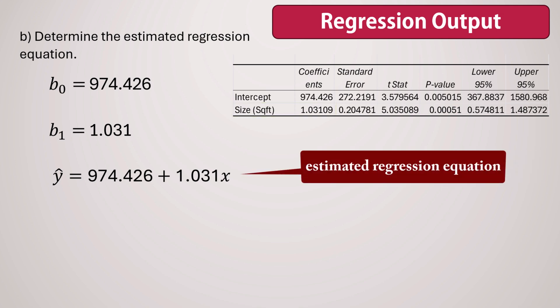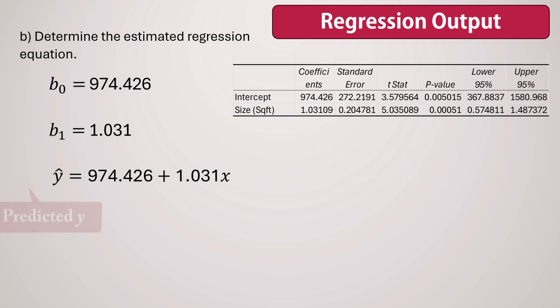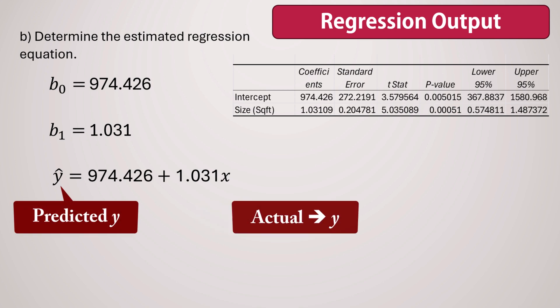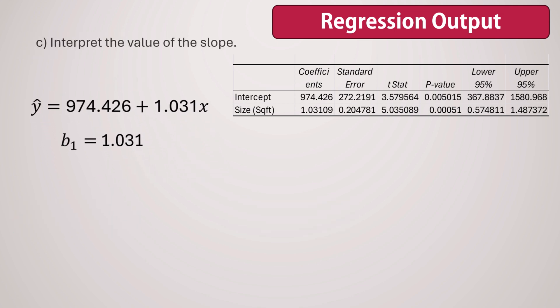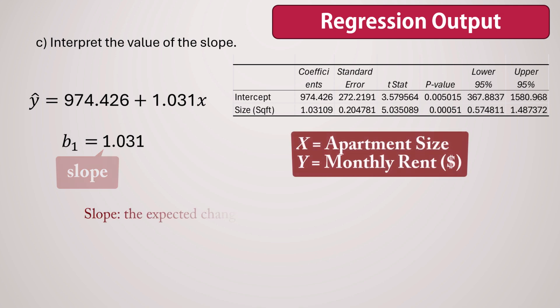Note that the hat on the Y indicates that this is the predicted value of Y. The actual value of Y is denoted simply as Y. Next, we interpret the value of the slope. The slope represents the expected change in Y, monthly rent, for a 1 unit increase in X, apartment size.